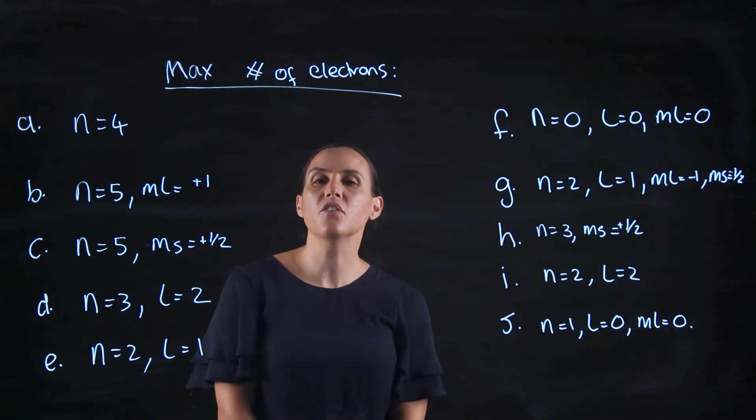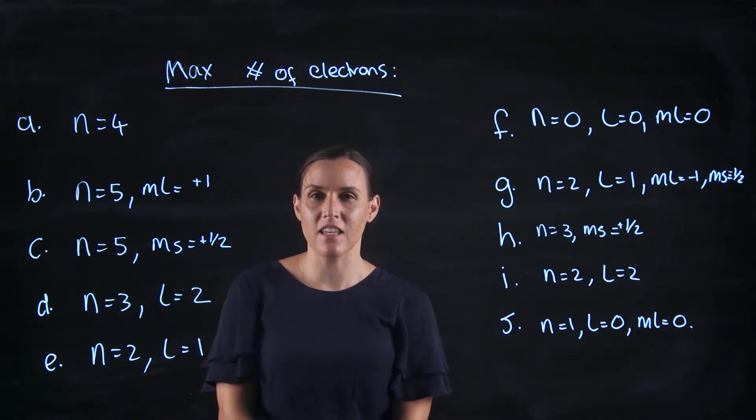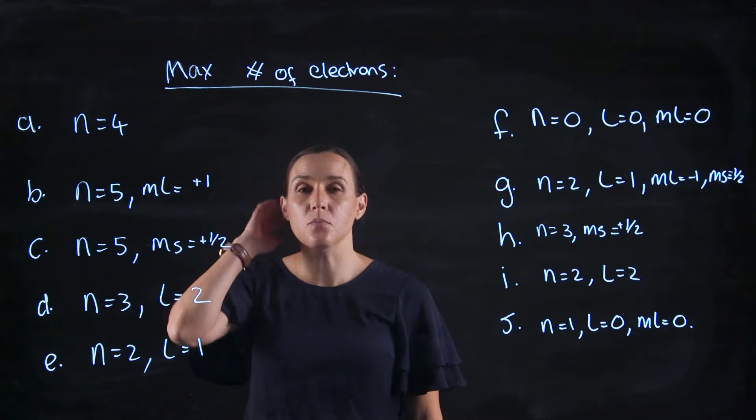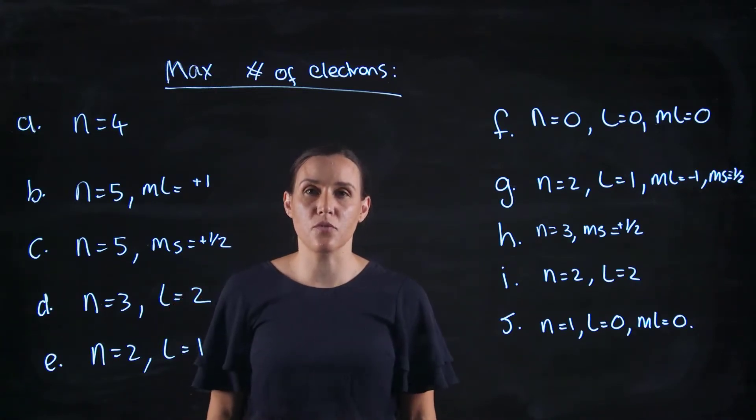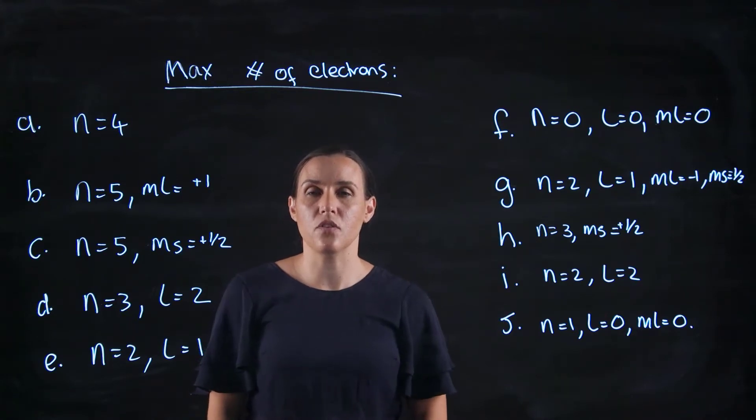Hi, so in this video we're going to look at the maximum number of electrons that these atoms can accommodate with these quantum numbers. Looking at the quantum numbers and seeing if they're plausible, if they are possible sets of quantum numbers to describe a particular orbital, how many electrons would exist with those?